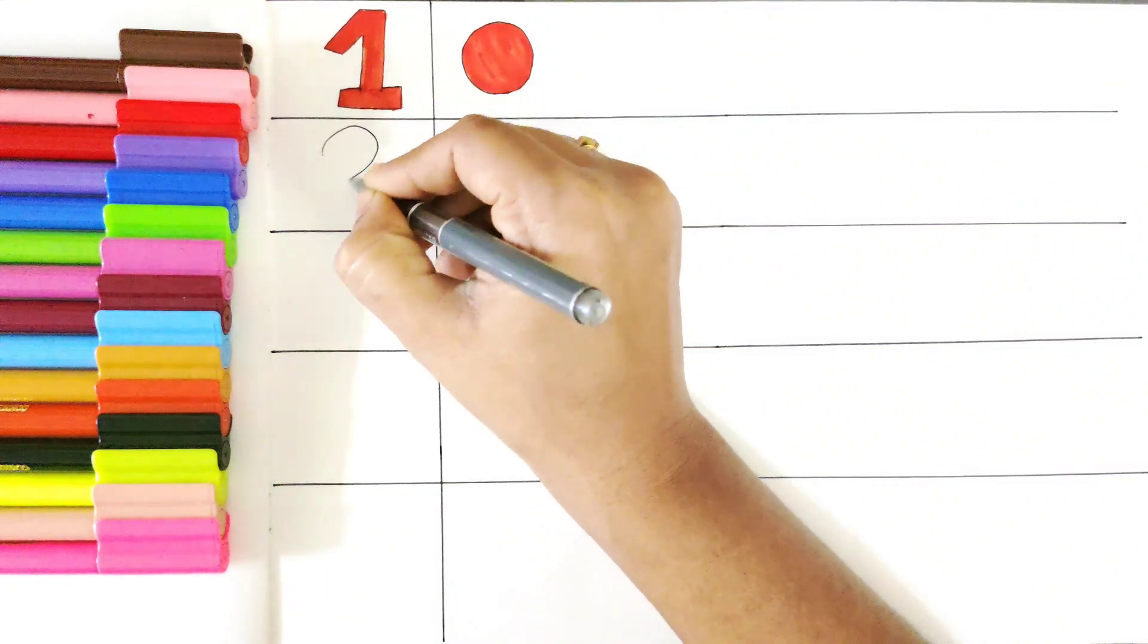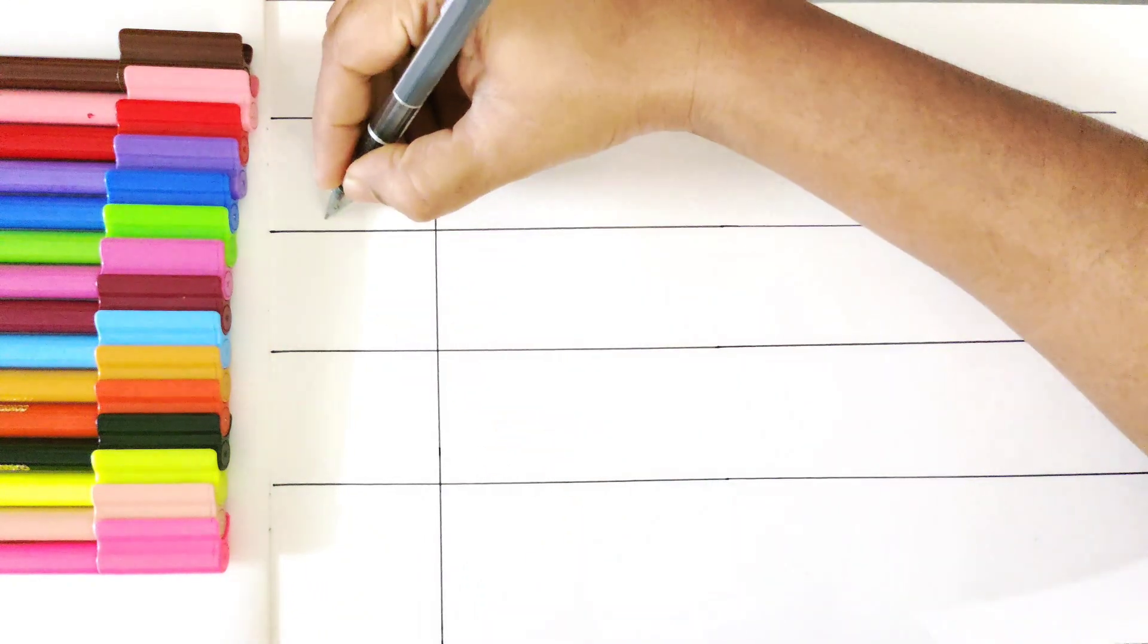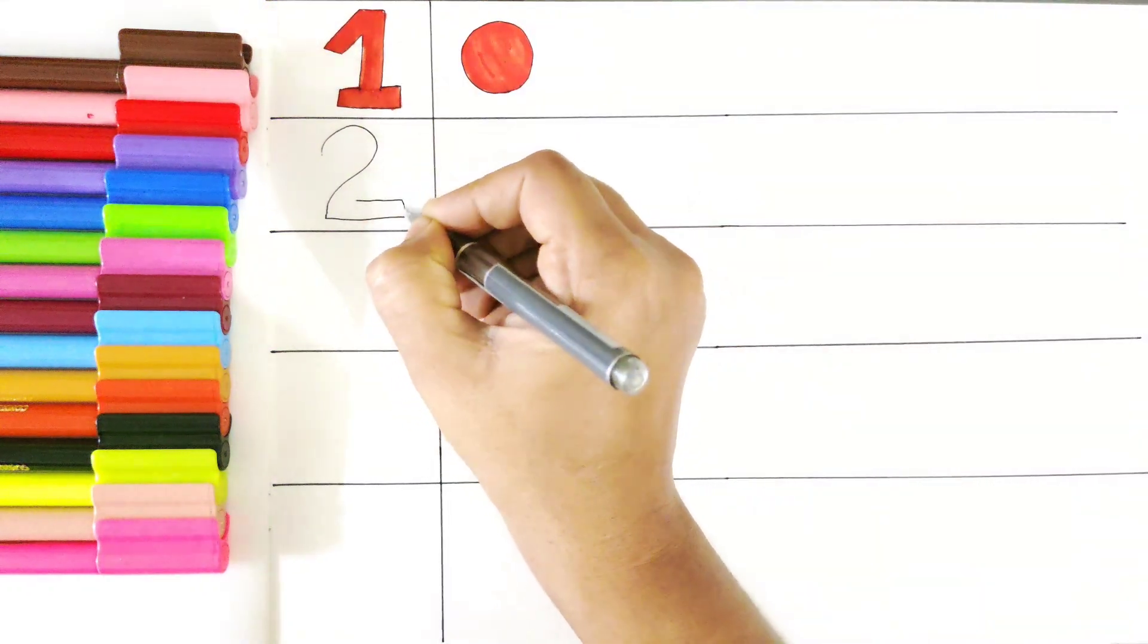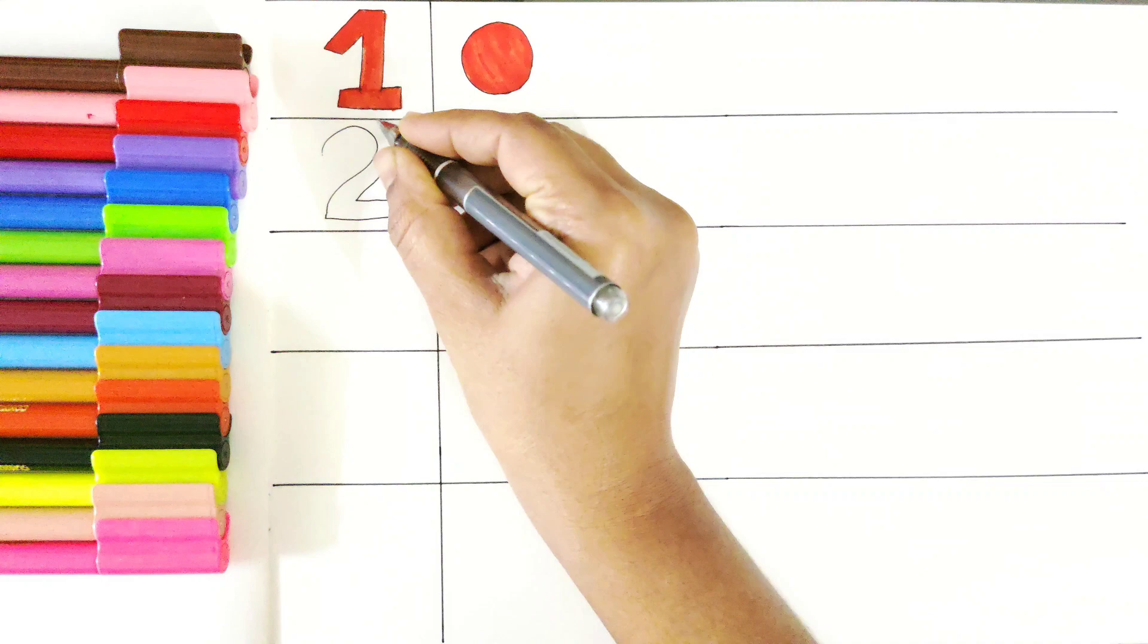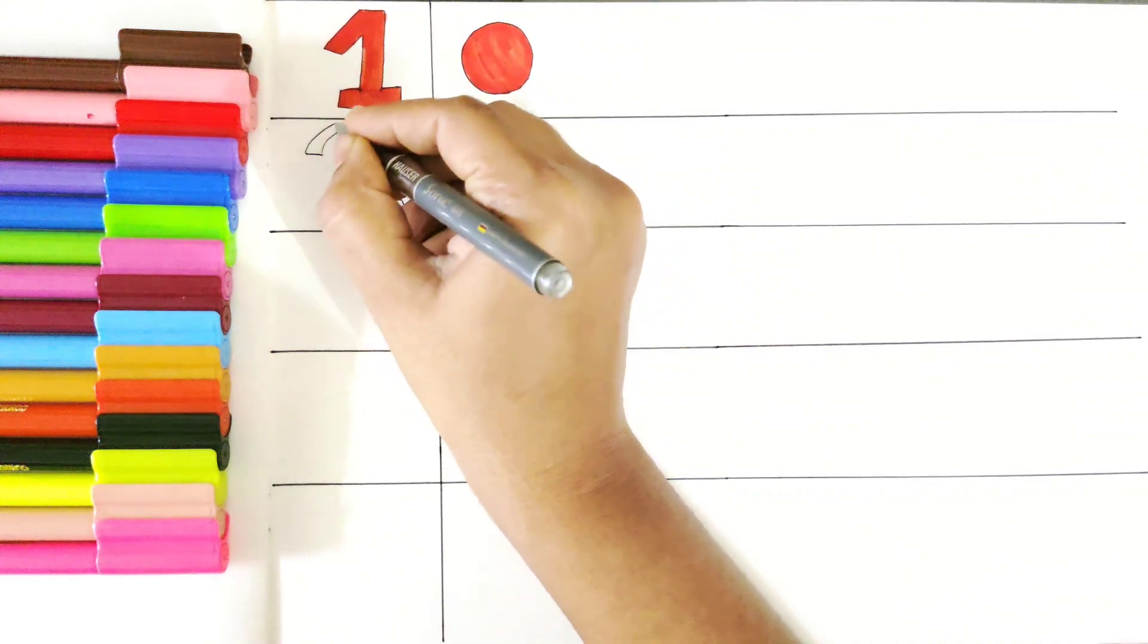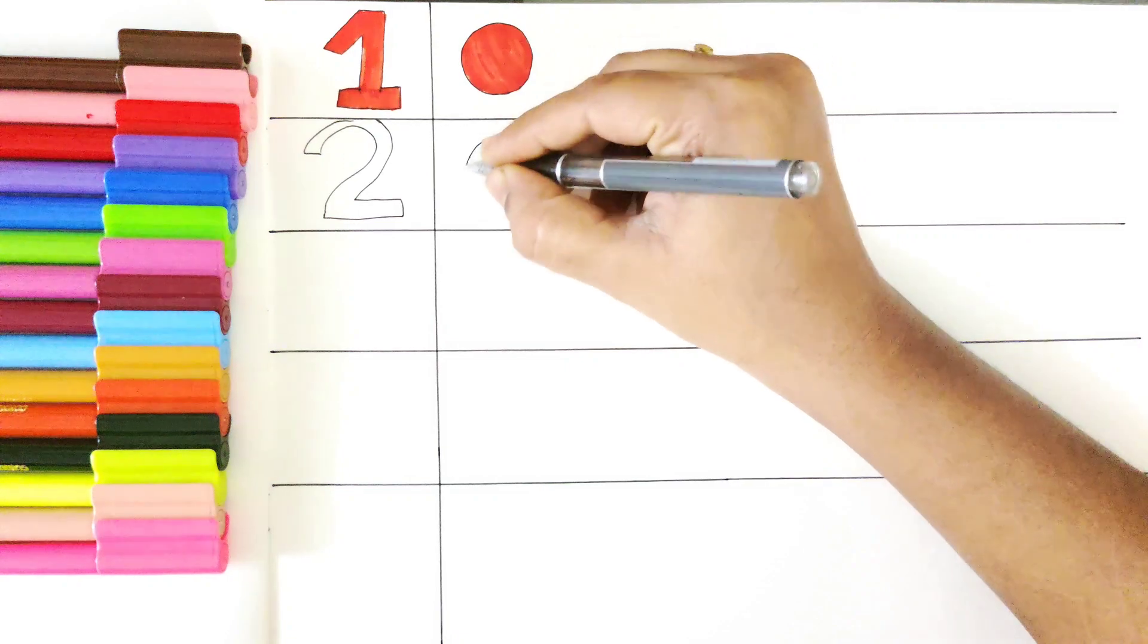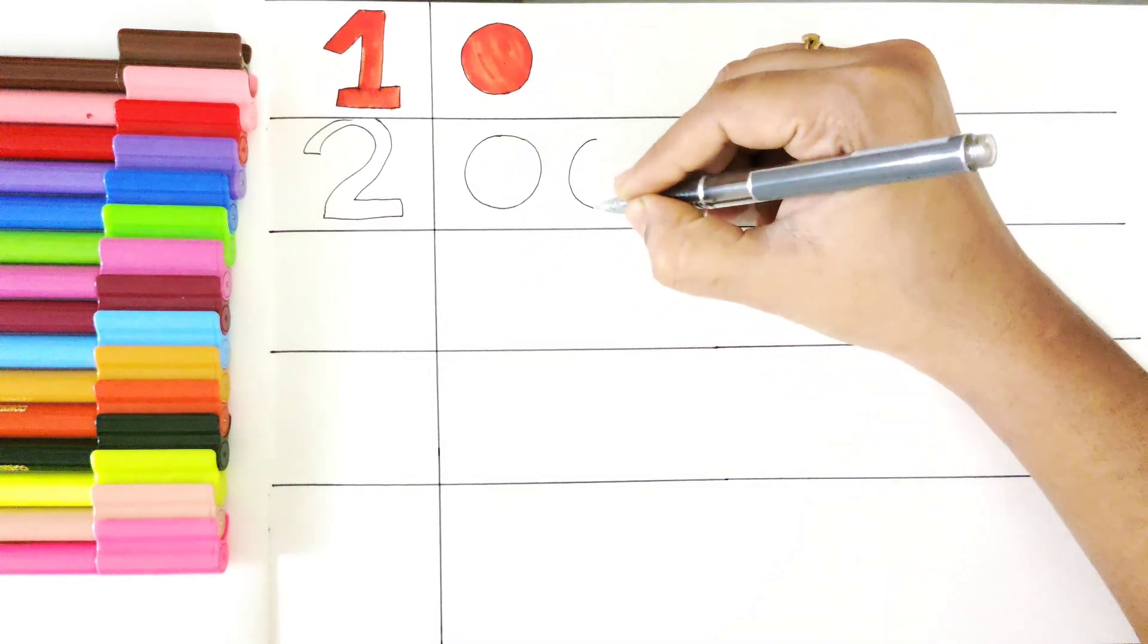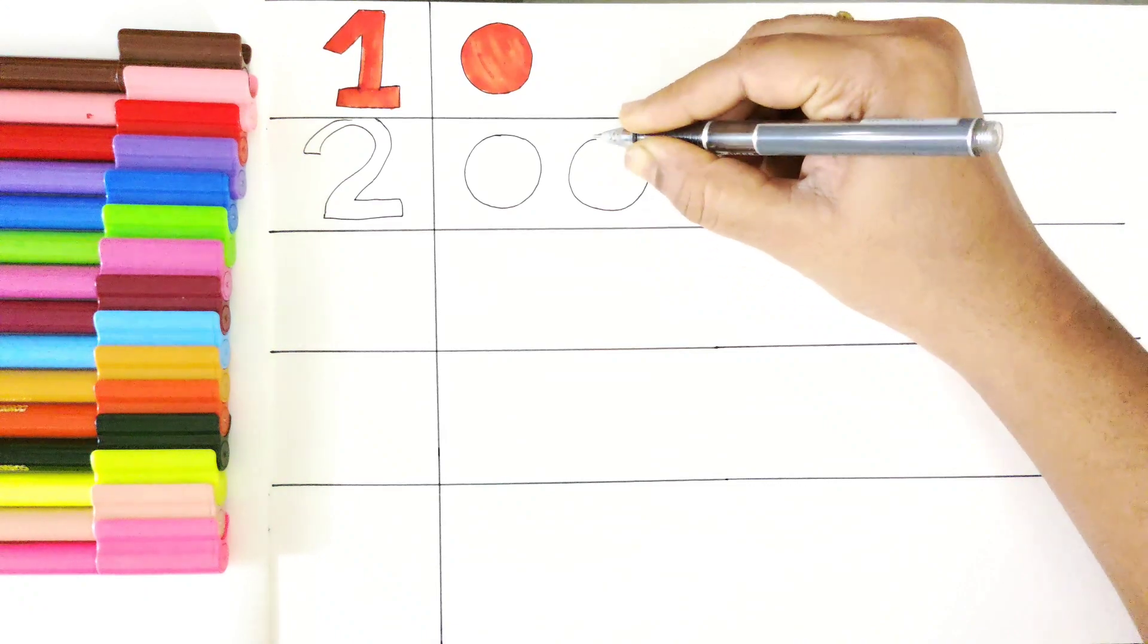Let's draw two. Number two. Number two is ready. Now, let's draw two balls. One, two.